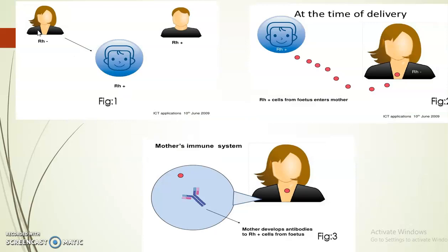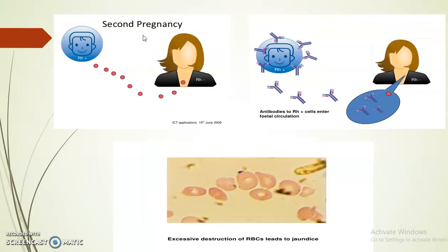Here we can see: the mother is Rh negative and the father is Rh positive; the baby is Rh positive. At the time of delivery, the baby's blood comes in contact with the mother's circulation, the mother's immune system gets sensitized, and they start secreting antibodies. During the second pregnancy, the baby's Rh antigens are readily recognized by the immune system, which neutralizes them with antibodies, resulting in hemolysis — excessive destruction of RBCs leading to jaundice.